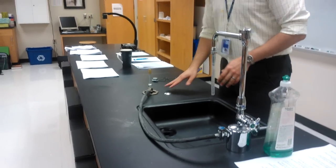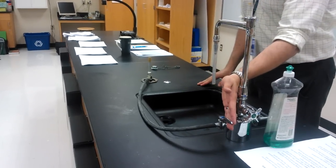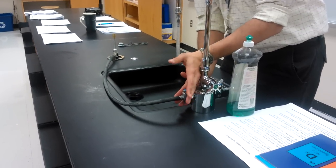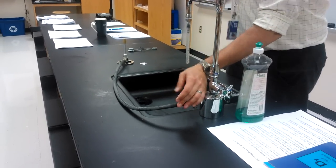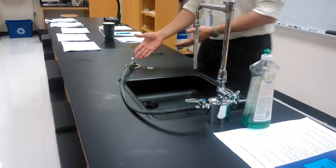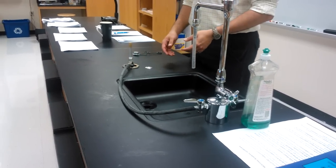Alright, the next step is I'm going to turn on my gas. I'm going to make sure that my gas is completely parallel with the nozzle. My gas is fully on but notice that I don't hear anything. That's a good thing. No gas is coming out. That means we did a good job closing the Bunsen burner.